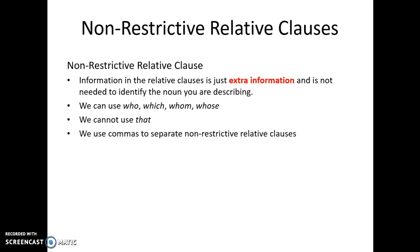The other type of relative clause we're talking about is the non-restrictive relative clause. Non-restrictive relative clauses provide information in the relative clause that's just extra information — it's not needed to identify the noun you're describing. With non-restrictive relative clauses, we can use the relative pronouns who, which, whom, and whose. Notice we don't have 'that' in this list — we can't use 'that' in a non-restrictive relative clause. Also, we use commas to separate non-restrictive relative clauses from the rest of the sentence.